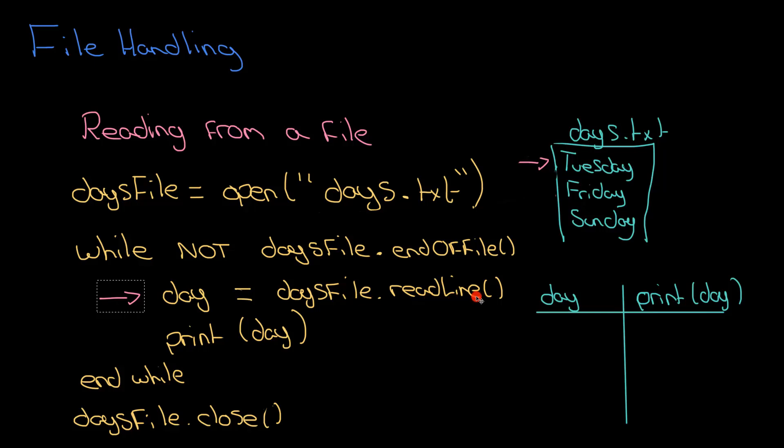So we're going to do day equals daysFile.readLine. Now two things happen here. The first thing is that the word Tuesday gets put in day. It reads that line from the file. The next thing that happens, and it can't be forgotten, is this arrow then automatically moves down because we've done a readLine. So then I'm going to print day, so I'm going to get the word Tuesday printed out.